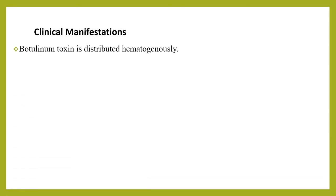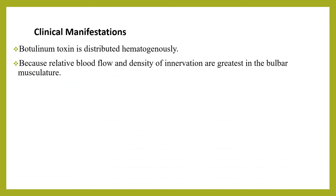Regarding clinical manifestations, the full clinical spectrum of infant botulism ranges from mild to fulminant sudden death. Botulinum toxin is distributed hematogenously, and because blood flow and density of innervation are greatest in the bulbar musculature, all forms of botulism manifest neurologically as a symmetric descending flaccid paralysis beginning with the cranial nerve musculature and progressing over hours to days. Bulbar palsy may manifest with poor feeding, weak cry, weak suck, drooling, and even obstructive apnea.